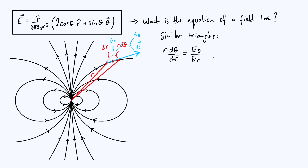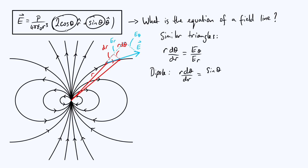If we can solve this differential equation for theta as a function of r, or r as a function of theta, that is just the equation of our field line. Let's solve this for the specific case of an electric dipole, where we know E_θ and E_r. For a dipole, r·dθ/dr equals E_θ / E_r, where E_θ is sinθ and E_r is 2cosθ, taken from the dipole field expressions at the top left.